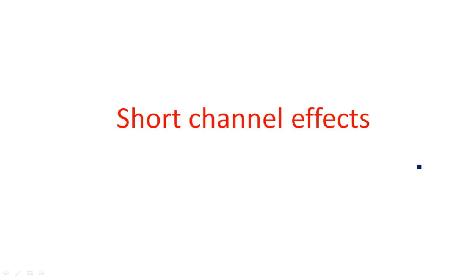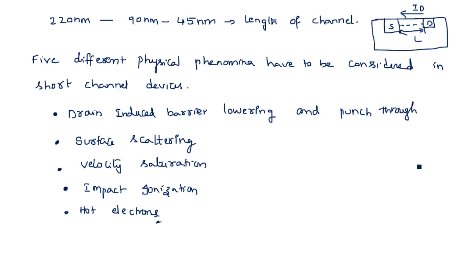In this video we are going to learn about the remaining problems associated with short channel effects. In the previous video, I explained drain-induced barrier lowering and punch-through. Drain-induced barrier lowering is when increasing the voltage between drain and source causes the channel to lower and completely break down, resulting in punch-through. Later we saw surface scattering, where electrons between source and drain become scattered and move around the surface of the transistor.